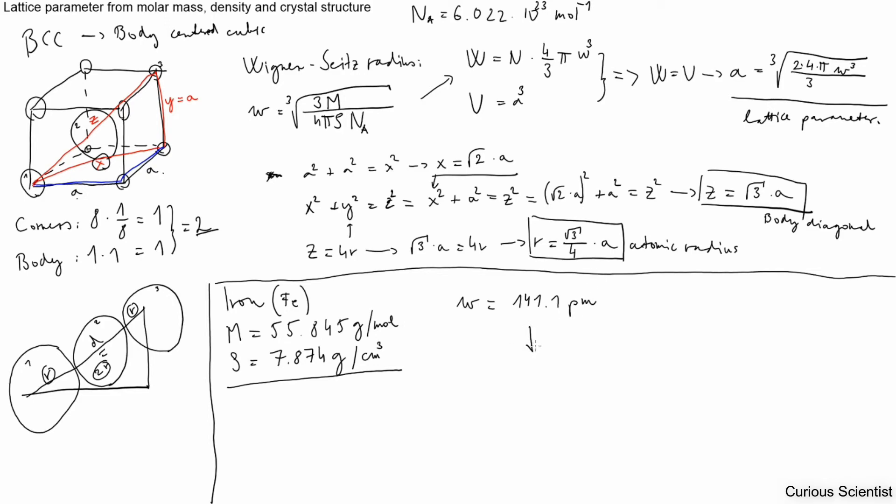First, Wigner-Seitz radius. I will not write down everything. We just substitute M, ρ, and N into the formula. And we get 141.1 picometers. And then from this, we can calculate the lattice parameter. And then again, we just follow this equation. Let me put it in a frame. So this will be 286.57 picometers. And then we just follow this equation for the atomic radius. So R equals 124.09 picometers.